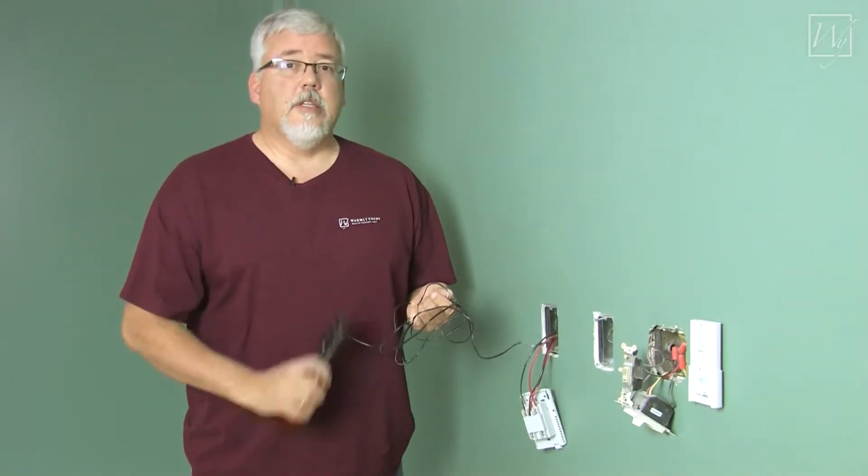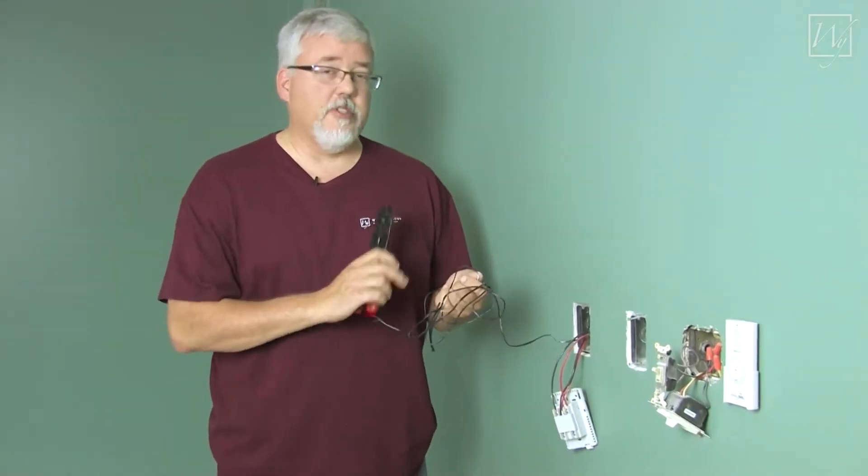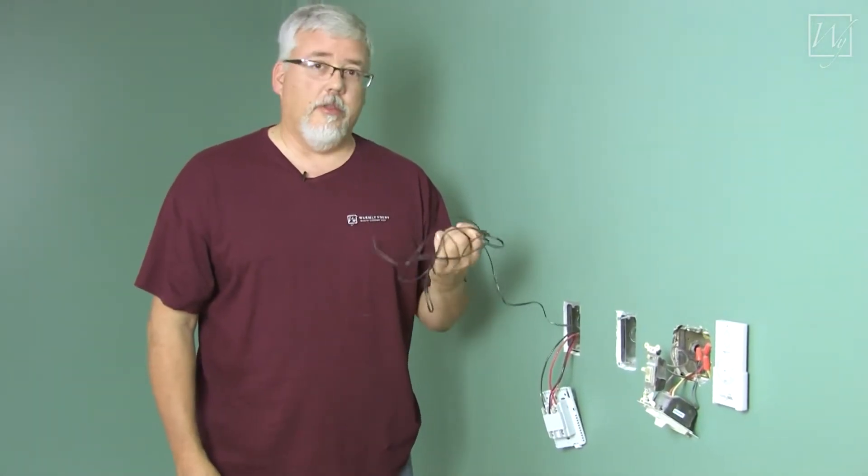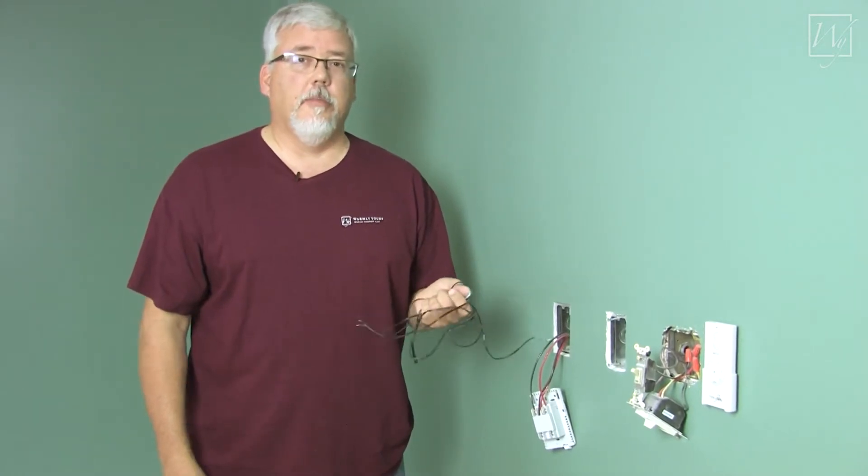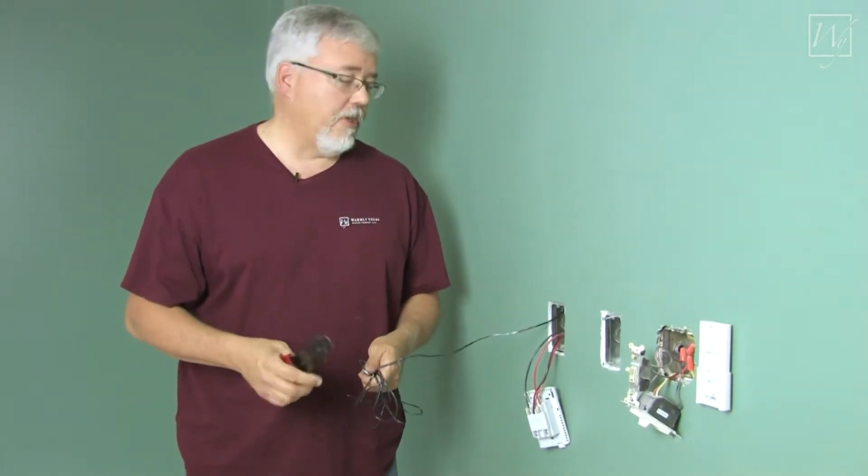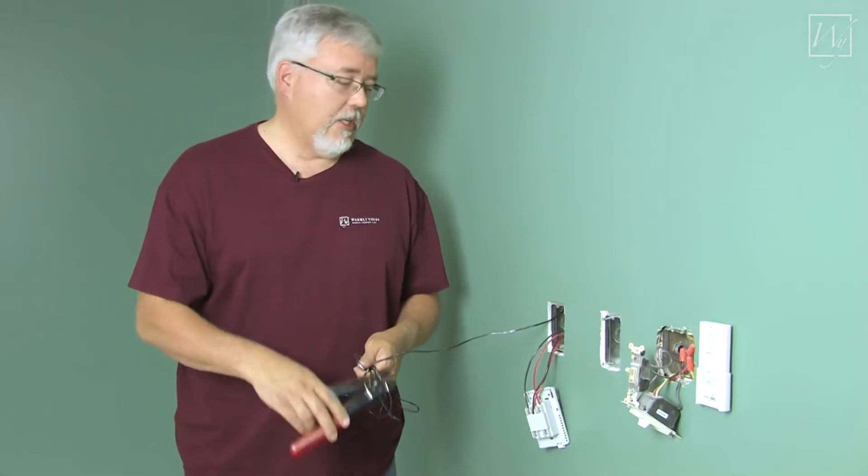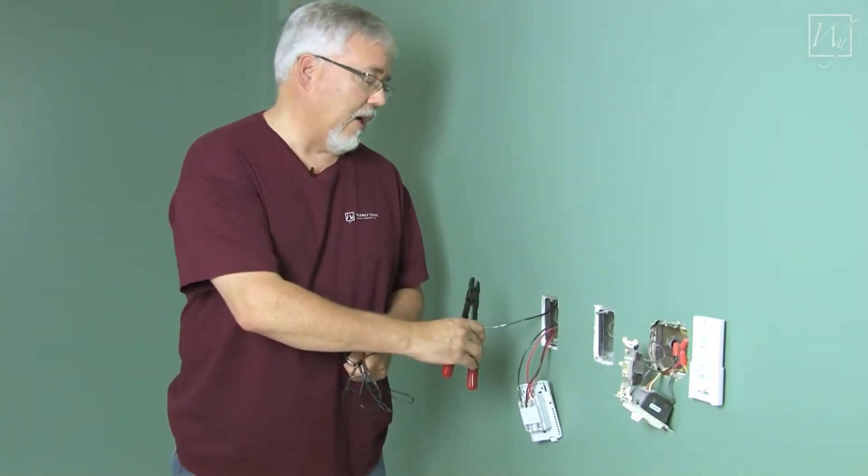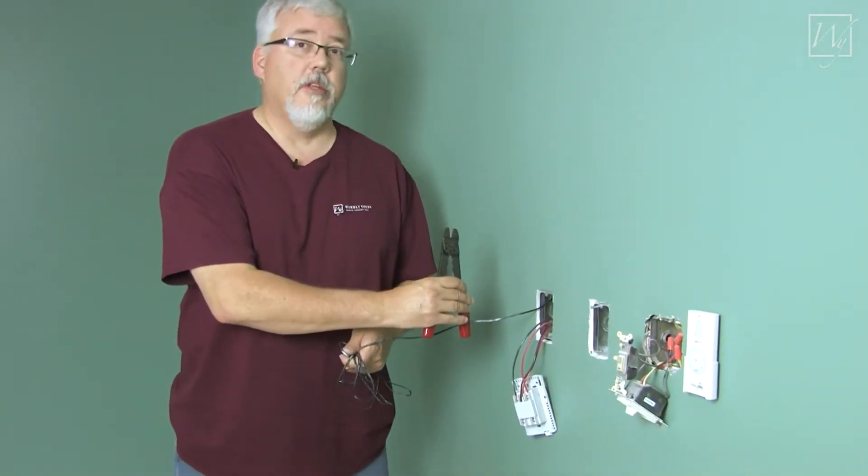Now that we know the thermostat sensor is good, it's time to trim some of this length. You do not need all of this wire, and there's no need to stuff it down into the box. The local code here says you must have eight inches of cable sticking out. So our eight inch mark is about right here, so I'm going to trim it to this spot.